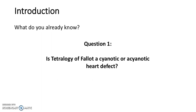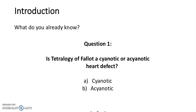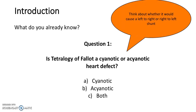Question 1: Is tetralogy of Fallot a cyanotic or an acyanotic heart defect? A, cyanotic; B, acyanotic; or C, both? Think about whether it would cause a left-to-right or a right-to-left shunt. The answer is cyanotic.